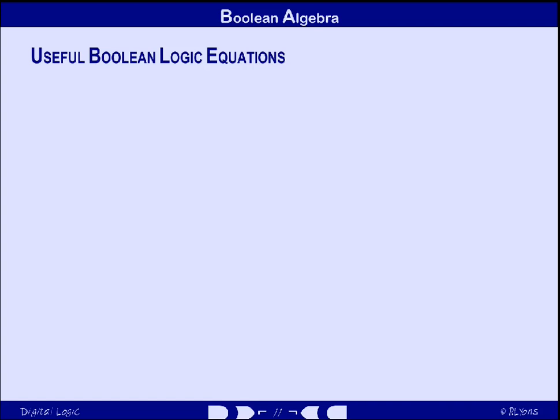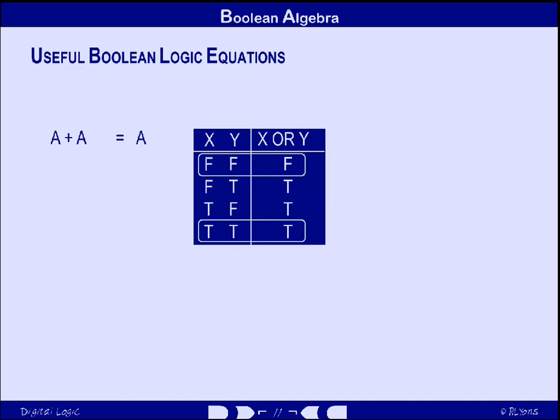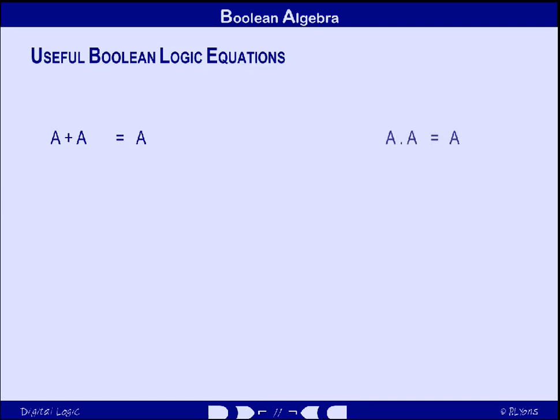We'll start with some of the simpler relationships. A OR A is always equal to A — A is always equal to itself, so the OR operator handling A and A will only be called on to deal with the first and last combinations in the truth table, where both input values are true or both are false. Where both are true, the result of the OR operator is true; where both are false, the result is false. So indeed the value of A OR A is always equal to the value of A. We can apply the same argument to A AND A — it's always equal to A.